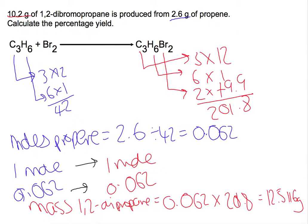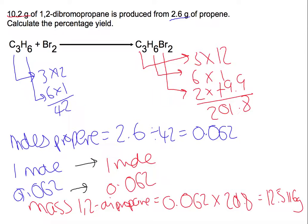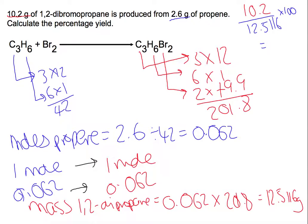We can now put that into the equation for percentage yield. So we're going to have our actual yield of 10.2 divided by our theoretical yield of 12.5116, times that by 100, and we should get a percentage yield of 81.5%.